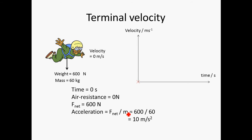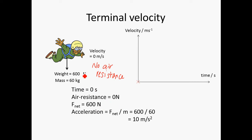Let's examine terminal velocity using a skydiver. Imagine the skydiver just dives out of an aeroplane. We can assume at that moment she doesn't have any velocity — the skydiver's velocity is zero. So if the velocity is zero, there will be no air resistance. That means only one force acts on her: her weight, which is 600 newtons given her mass is 60 kg. The resultant force is 600 newtons, and the acceleration is 10 m/s².